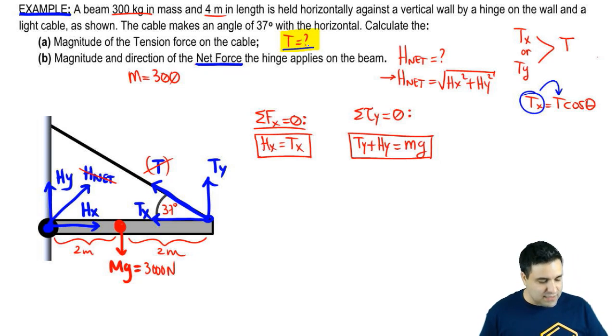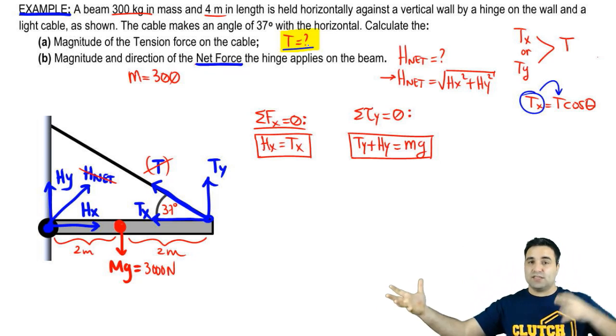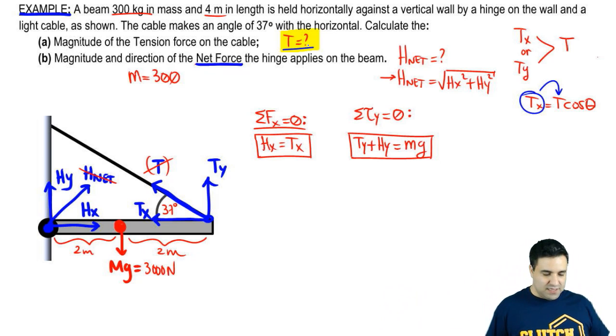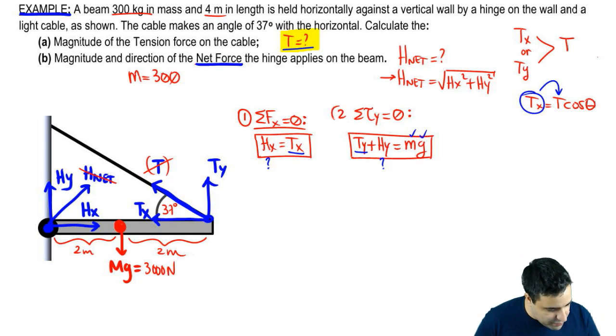Really, when we're looking for T, we're really looking for Tx or Ty, whichever one we can find in the easiest way. I cannot find Tx because I don't know Hx. I cannot find Ty because even though I know Mg, I don't know Hy. So these two equations by themselves are insufficient. So I'm going to have to write a third equation. One, two, three. The third equation will be sum of all torques equals zero, about a point, and we want to make sure that we pick a clever point to solve this.